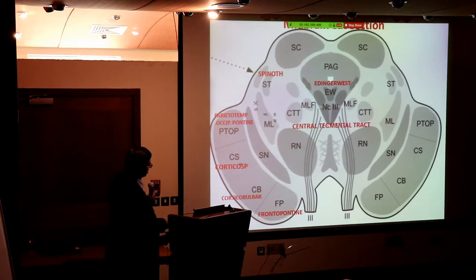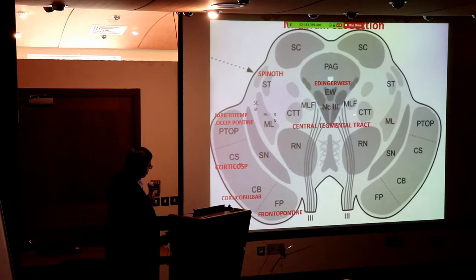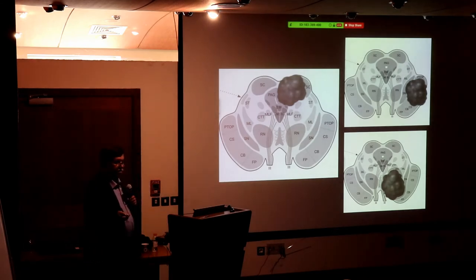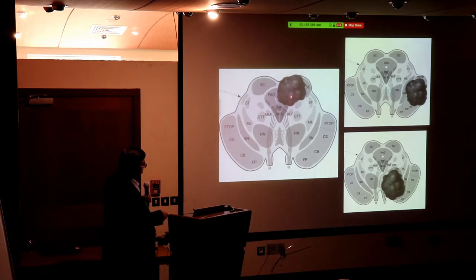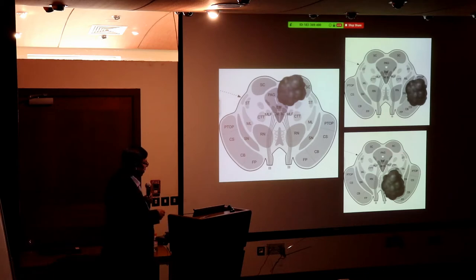Here is the Edinger-Westphal nucleus of the third nerve, the medial longitudinal fasciculus, and the central tegmental tract. The third nerve comes from its nucleus and exits anteriorly, while the trochlear exits posteriorly. I am emphasizing this because brain stem surgery depends on knowing which way the lesion is approaching — from posterior or anterior — so you can plan accordingly.